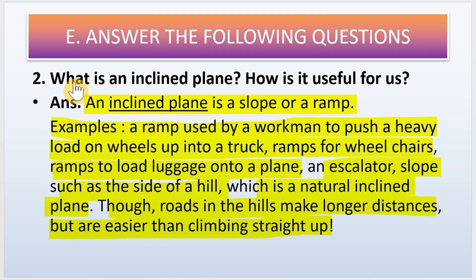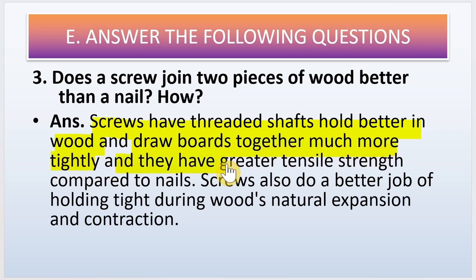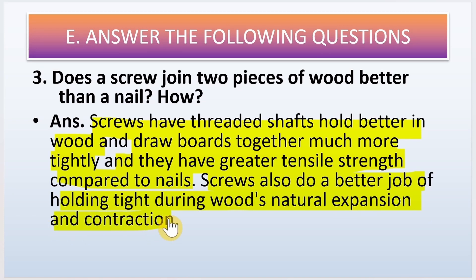Third long answer: does a screw join two pieces of wood better than a nail? Yes — screws have a threaded shaft that holds better in wood and draws boards together much more tightly, and they have greater tensile strength compared to nails. Screws also do a better job of holding tight during wood's natural expansion and contraction.